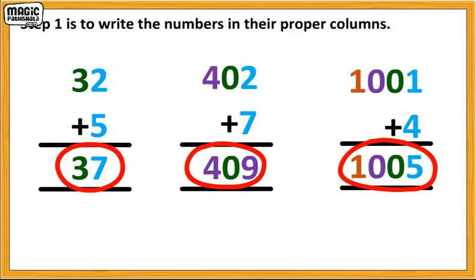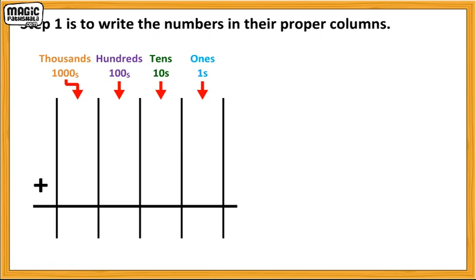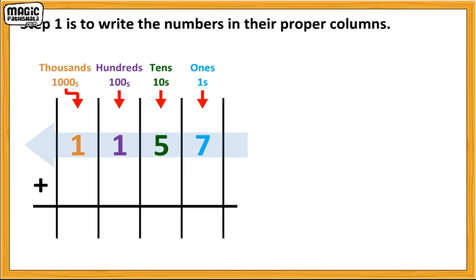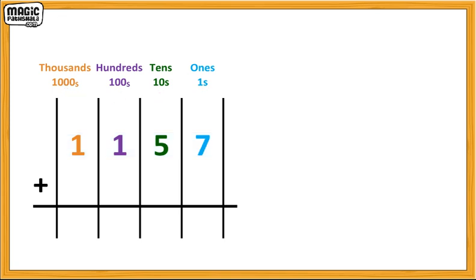Step one is to write the numbers in their proper columns. One-thousand one-hundred-and-fifty-seven means seven in the ones column, five in the tens column, one in the hundreds column, and one in the thousands column. Similarly, for one-thousand two-hundred-and-thirty-eight. Remember the rule: you always start writing a number from the right in a place value chart.